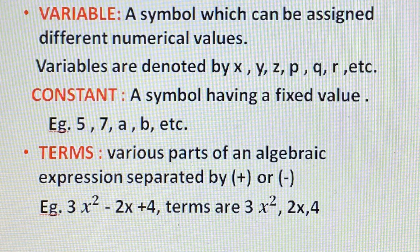Variables can be denoted by x, y, z, p, q, r, etc. — you can denote them by any alphabet. A constant is a symbol which has a fixed value. For example, 5 has a fixed value, 7 has a fixed value, and a, b are all constants.